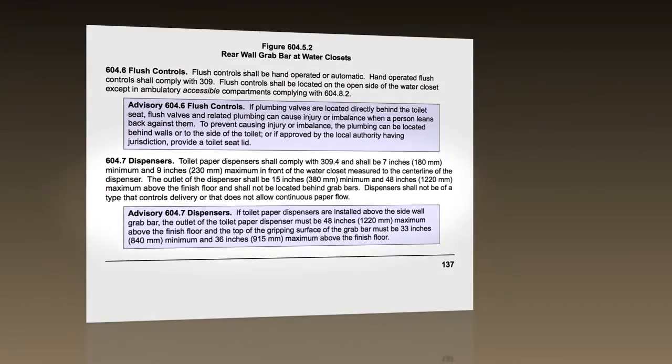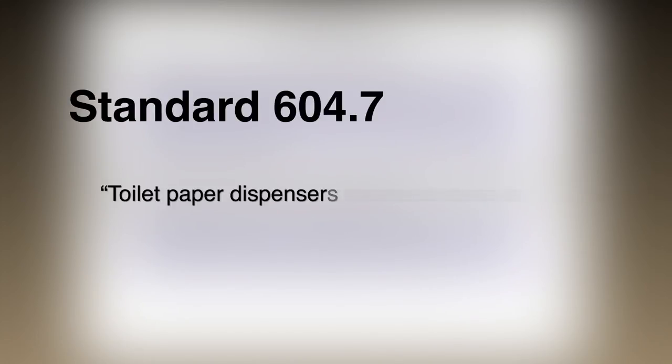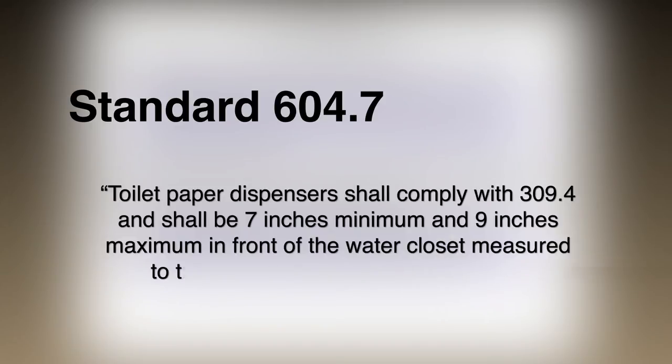Regarding the mounting locations of towel and tissue dispensers, Standard 604.7 states: Toilet paper dispensers shall comply with 309.4 and shall be 7 inches minimum and 9 inches maximum in front of the water closet, measured to the center line of the dispenser.